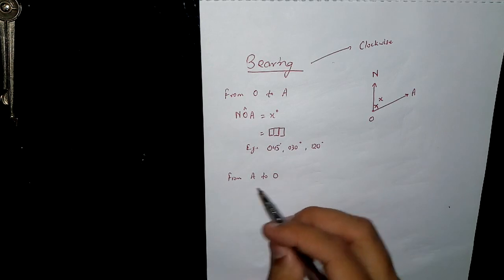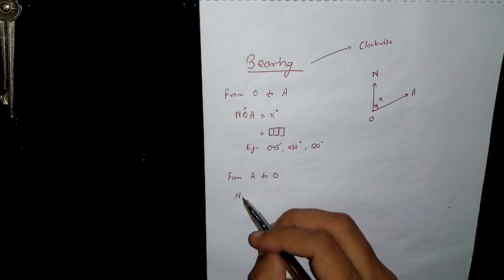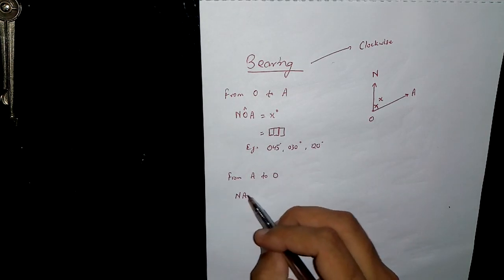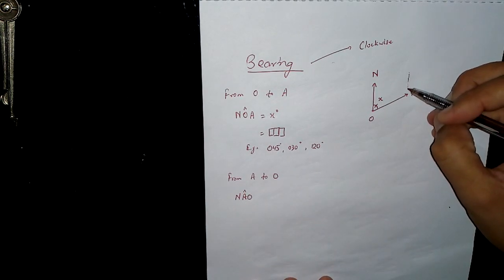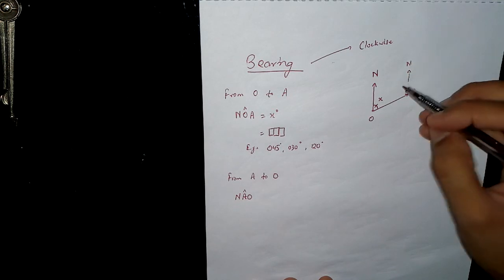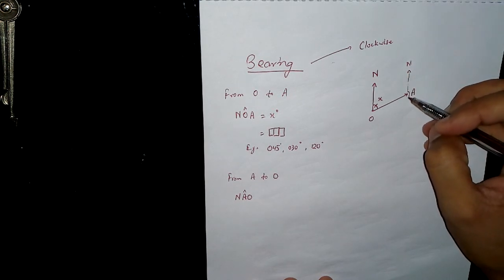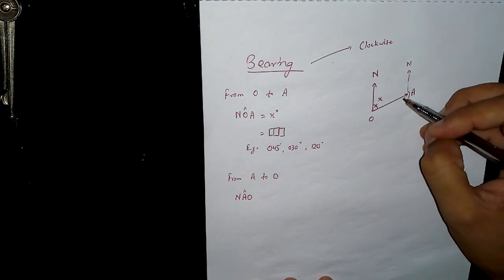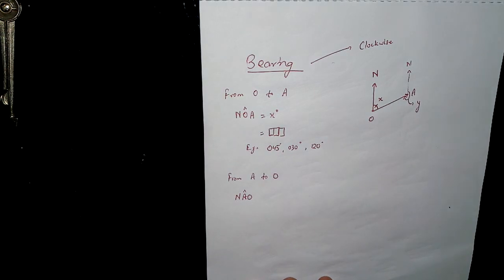Now for suppose I would ask from A to O. So it must be North-A-O. I have to put a North on A and I will calculate this angle. For suppose that angle is Y degrees.